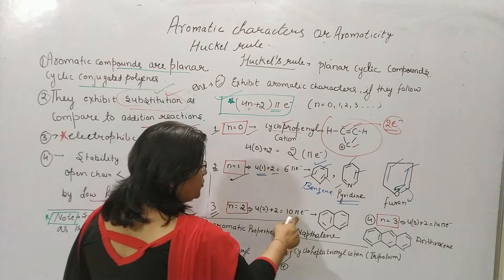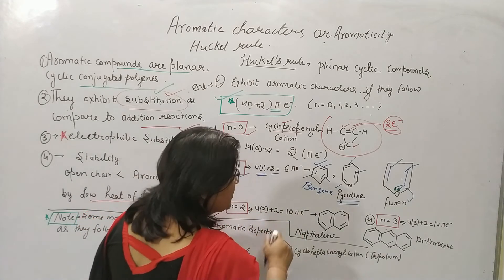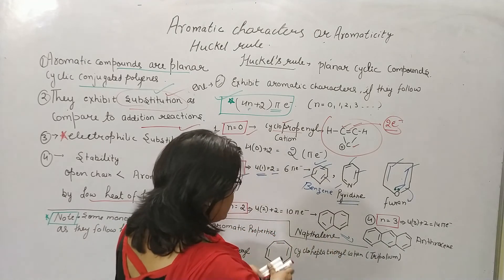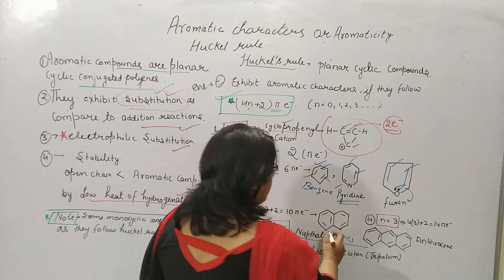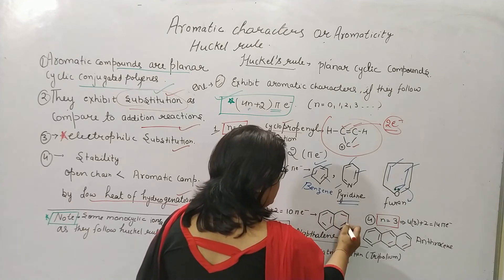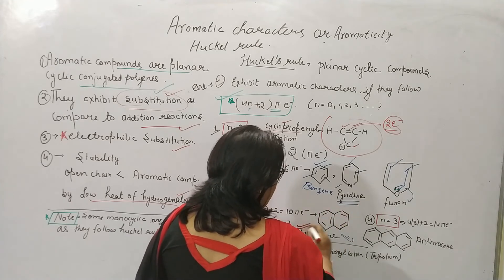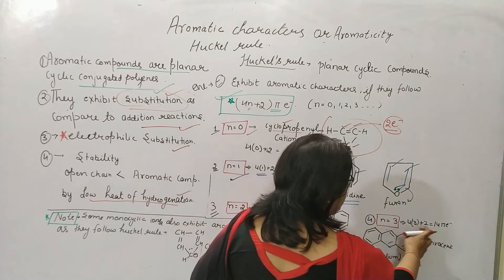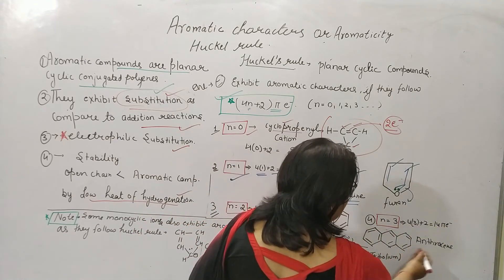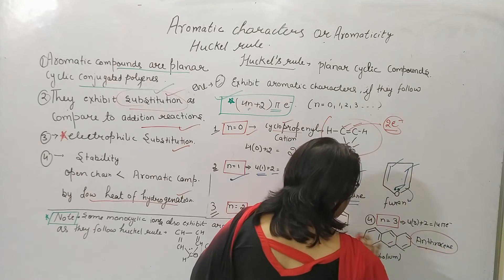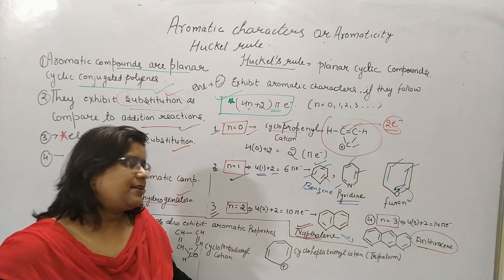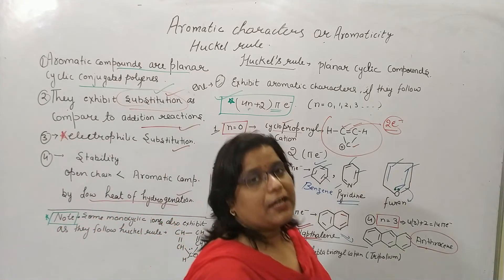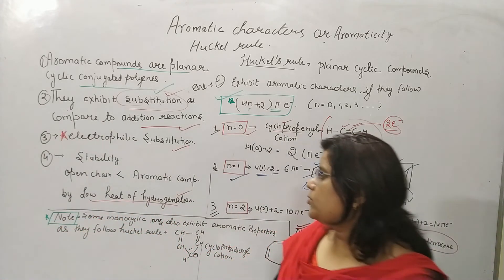For n = 2: 4(2) + 2 = 10 pi electrons. The example is naphthalene — two benzene rings fused together — which has 10 pi electrons and shows aromatic character. For n = 3: 4(3) + 2 = 14 pi electrons. The example is anthracene, formed by combining three benzene rings and adjusting the bonds.